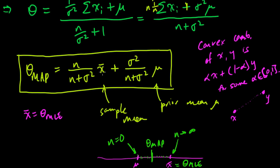So this type of representation as a convex combination of the prior and the sample mean, it turns out that this is actually a fairly general thing for the MAP estimate. It's very often that it turns out to be a convex combination of the prior and, more generally, the MLE.